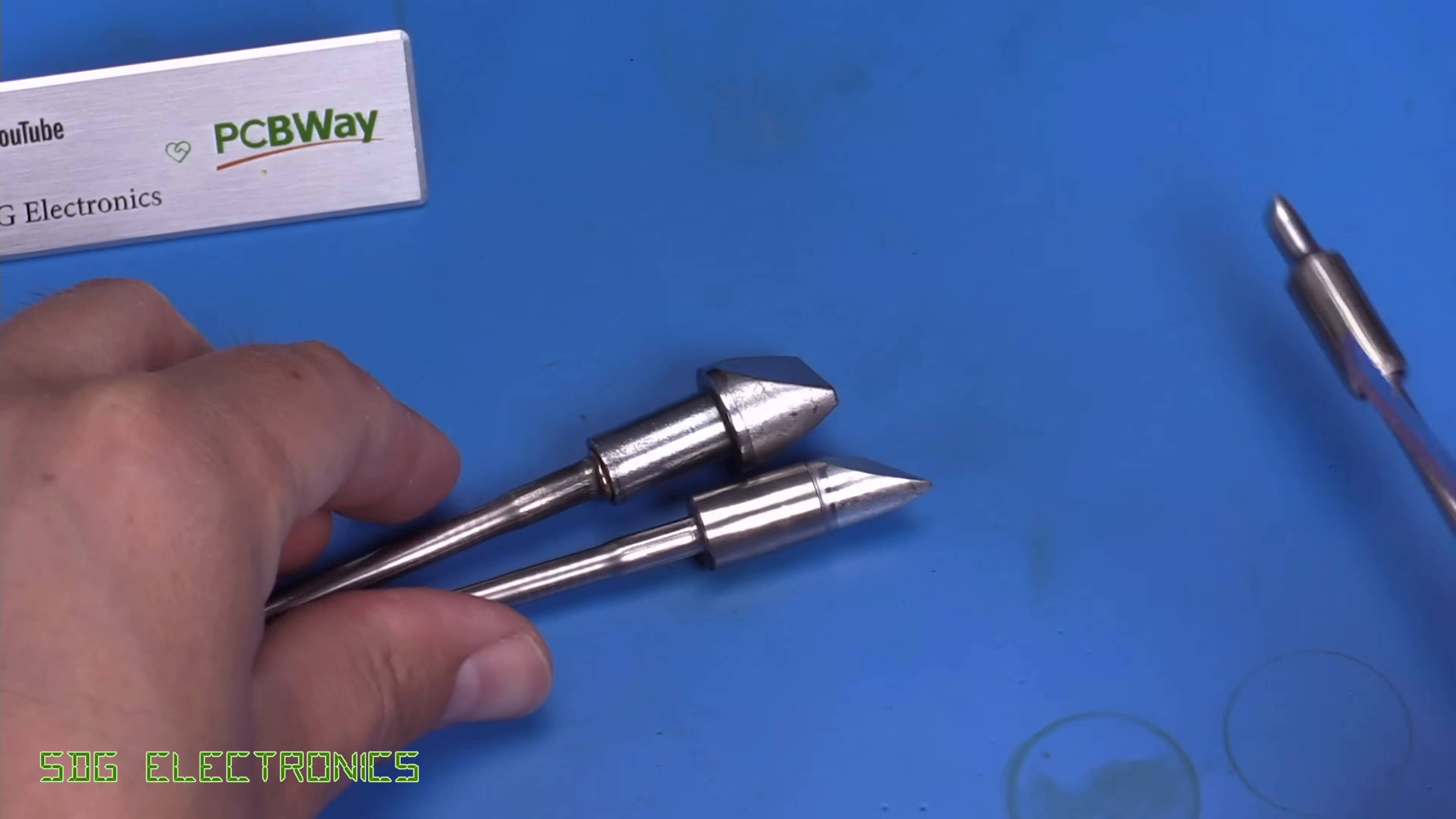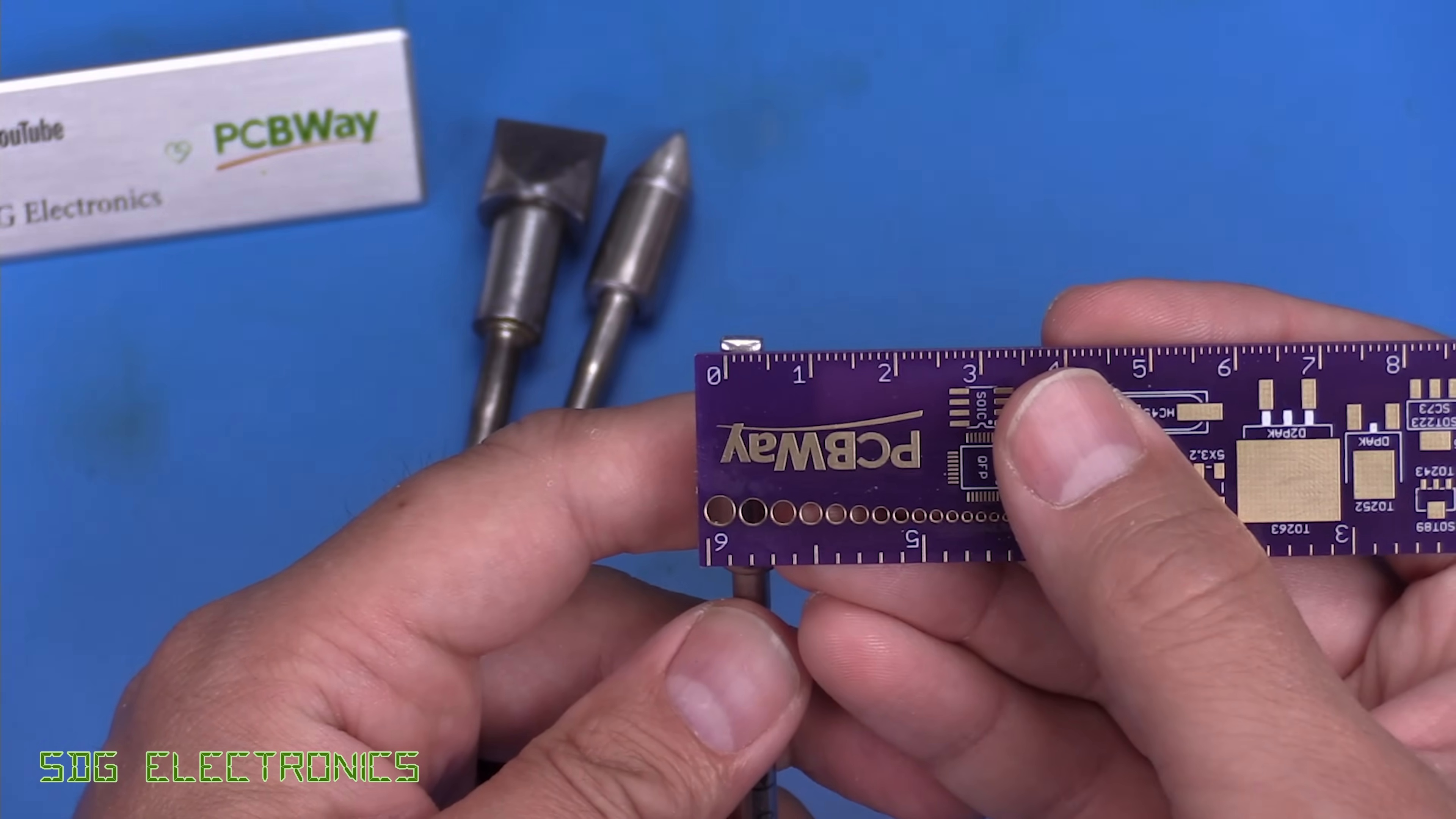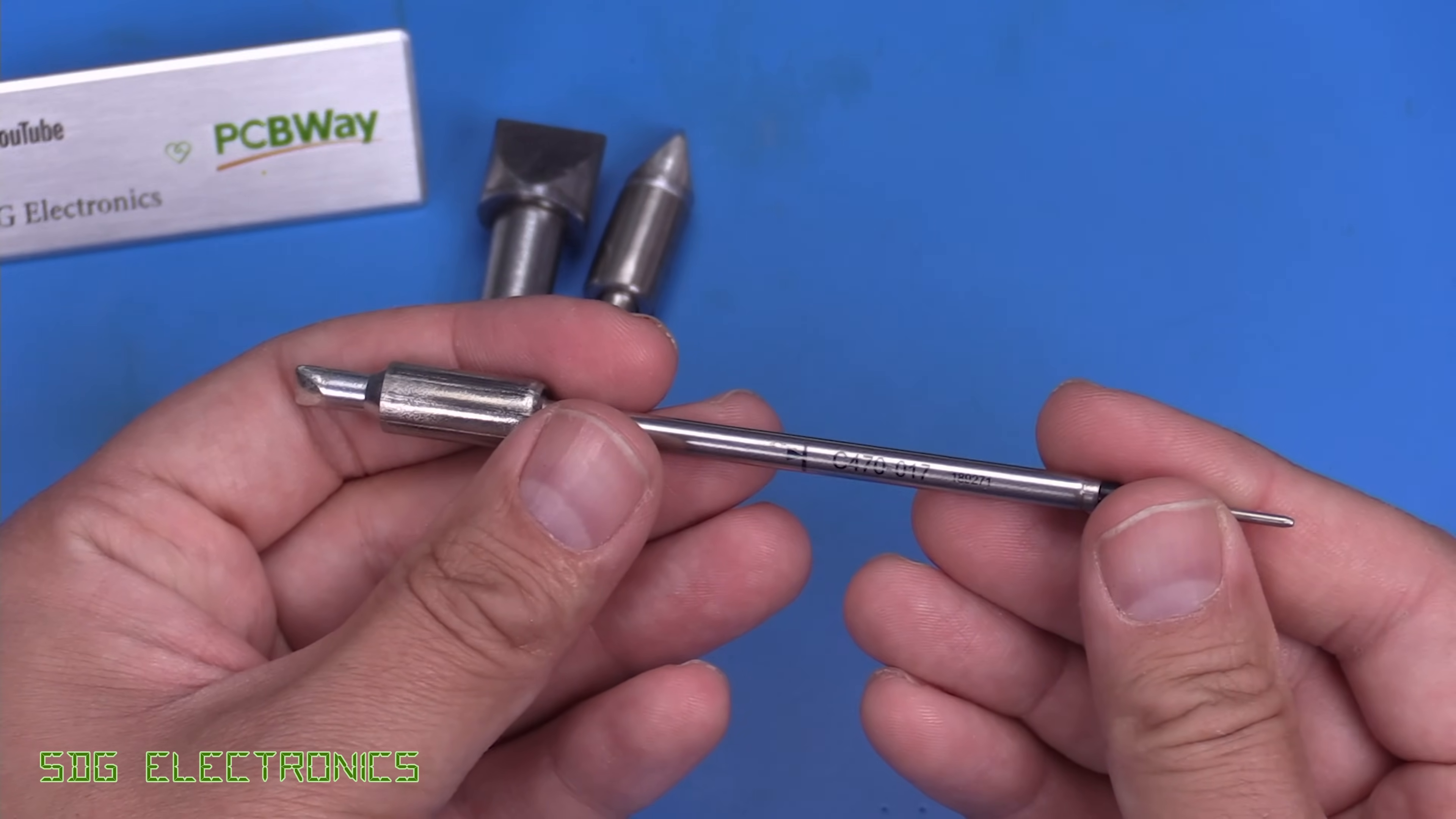I have also got a genuine JBC 470 cartridge just here. So that's what one looks like direct from JBC. I think this one's a five millimeter cartridge, which is a little bit more designed for PCB type use if you need to deliver loads of power into a ground plane or something like that.